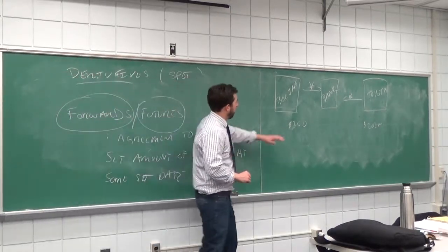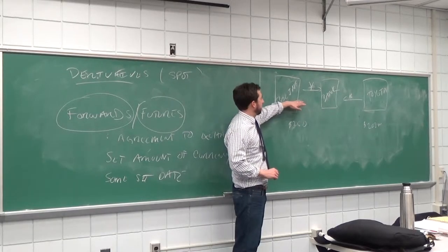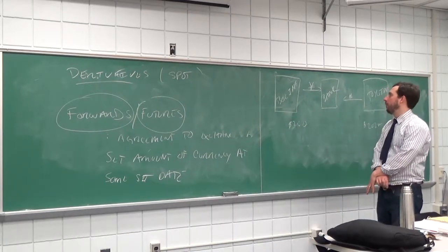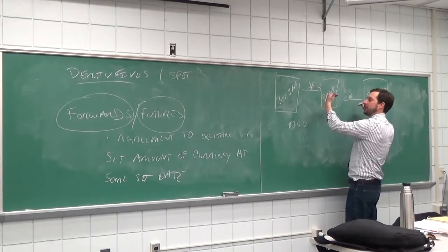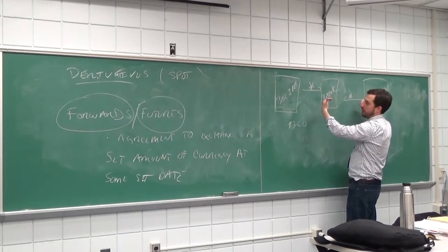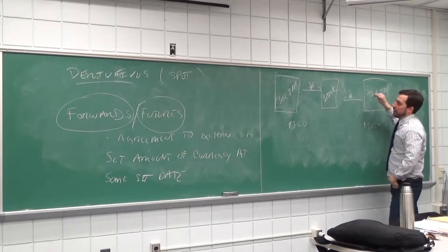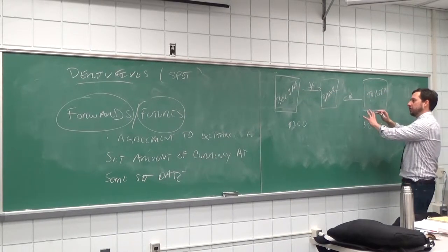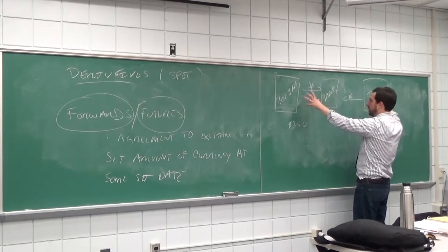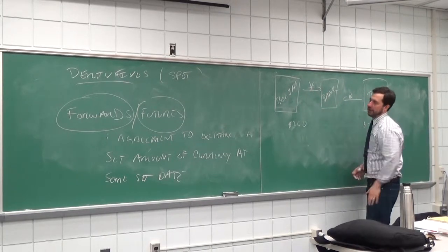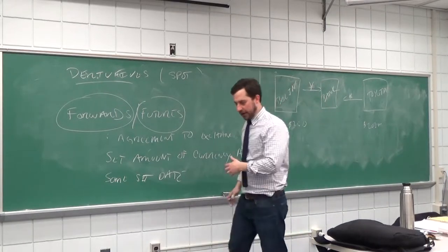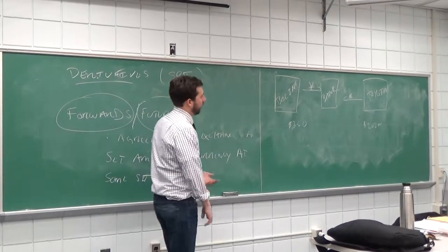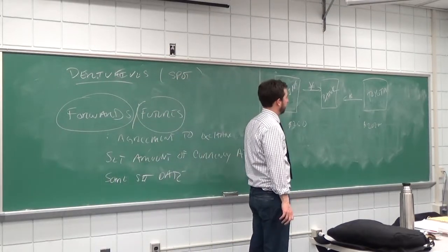In a forward market, it only makes sense to tailor contracts if they're large. Also, because it is only a bilateral trade with the bank matching Boeing and Toyota, there is counterparty risk. If Toyota defaults, then Boeing wouldn't get its money. So people only trade if they're confident in the other counterparty — there's very little chance of Toyota or Boeing defaulting, making them natural players in the forward market.